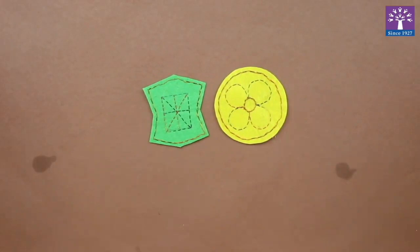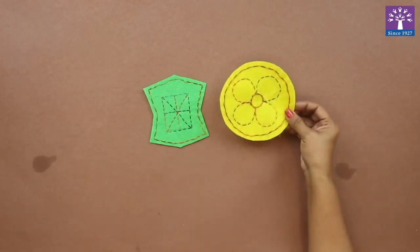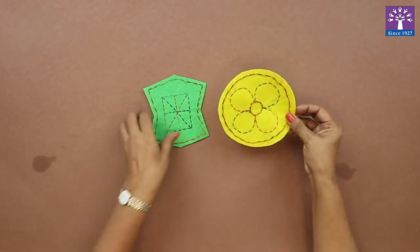In our previous class we have learned how to do the running stitch and how to do the overlapping stitch. We are going to apply this knowledge and make coasters from felt cloth. So let's begin.